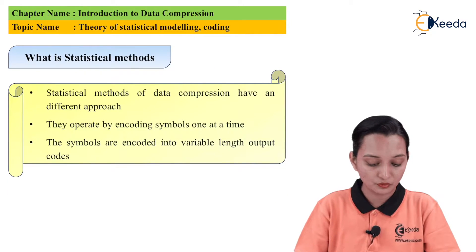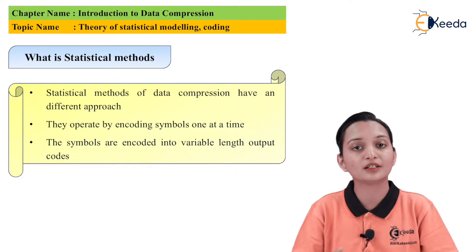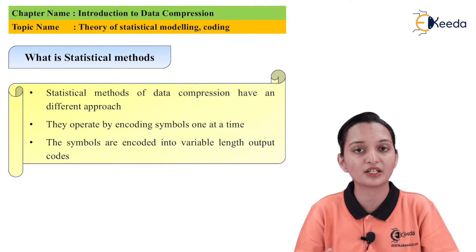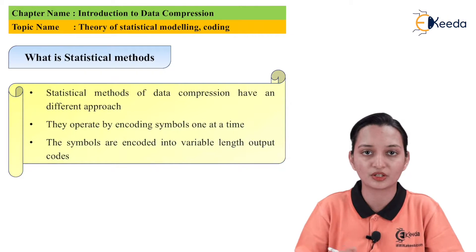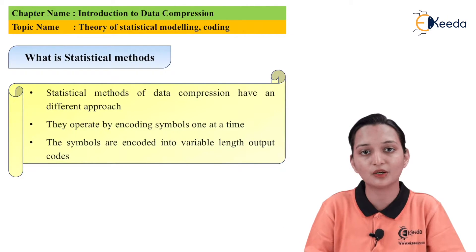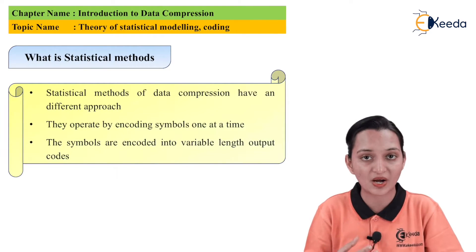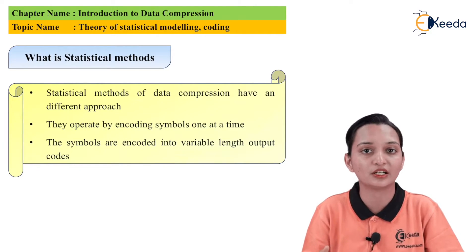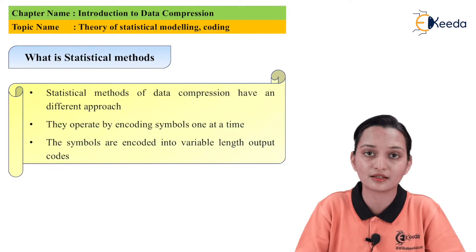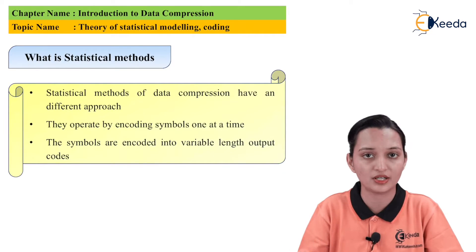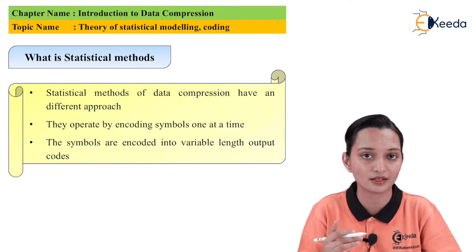Now, what are the models or methods which we can use for this coding? In real-life applications, we cannot use only LZ77 or LZ78 — these are methods which can find out values. But in practice, in reality, we require some models to do the data compression. First is the statistical method, or statistical models. We will try to understand what it means by statistical methods. These methods of data compression have a different approach than that of other techniques.